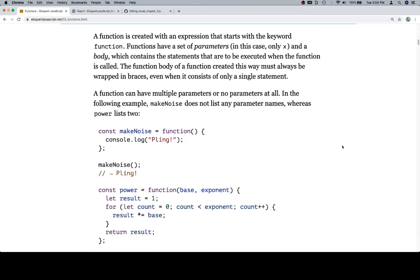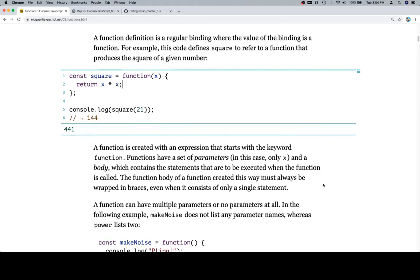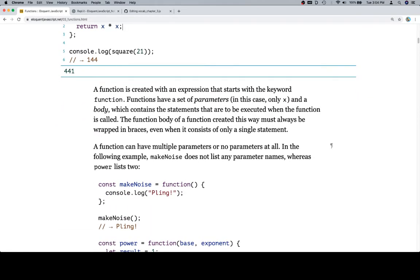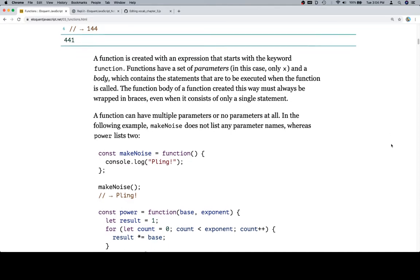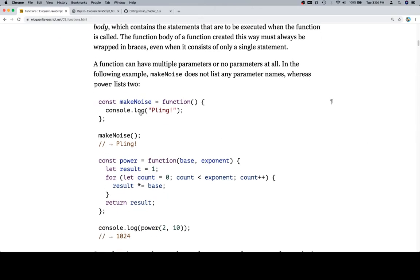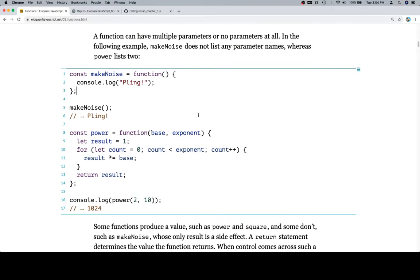A function can have multiple parameters or no parameters at all. Parameter is this guy right here, whatever we put in this value. A function can have multiple parameters or no parameters at all. In the following example, makeNoise does not list any parameter names, whereas power lists two. So a couple functions here. MakeNoise, no parameters. It's just going to console.log pling.